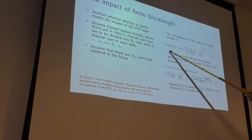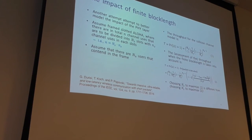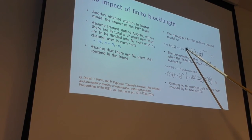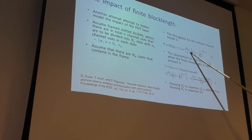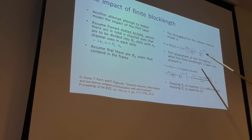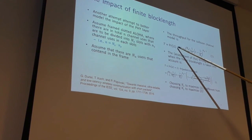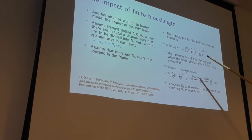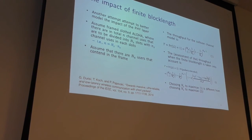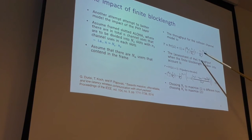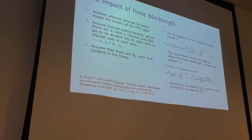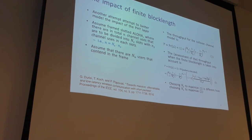The throughput for frame slotted aloha is the probability that exactly one user occupies a slot, given Nu contending users and ns slots. This is the probability that one of the Nu users selects a given slot and the rest do not. It can be shown that this is maximized when ns equals Nu — the number of slots should match the number of users to maximize throughput under the collision channel model.